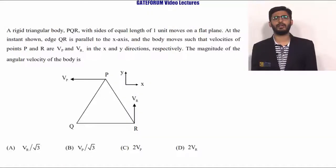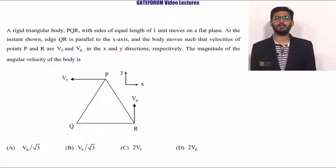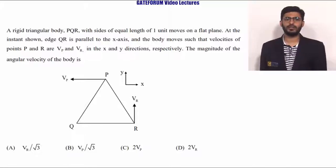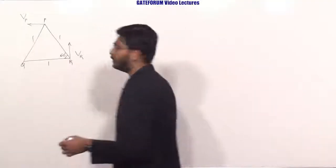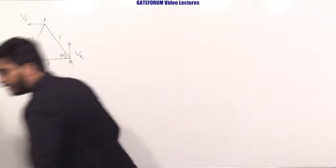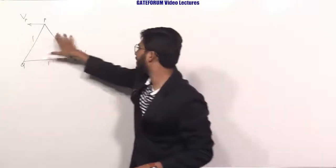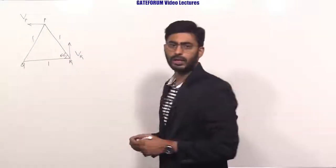The next question belongs to engineering mechanics from the kinematics topic. A rigid triangular body PQR with sides of equal length one unit moves on a flat plane. Edge QR is parallel to the X-axis, and the body moves such that velocities of P and R are VP and VR in the X and Y directions respectively. Since all sides are equal to one unit, all angles are 60 degrees. Find the magnitude of angular velocity.